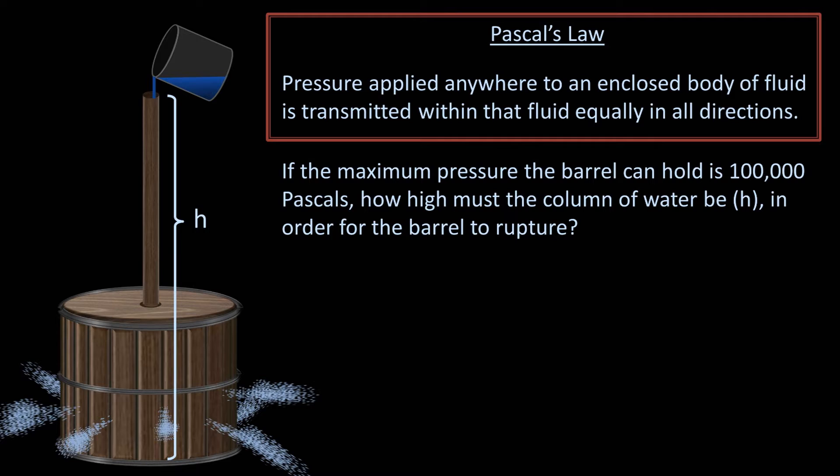We know that the primary equation of hydrostatics is the pressure gradient equals the density of the fluid times acceleration due to gravity times h. In this case, when we talk about the maximum pressure the barrel can hold, it actually refers to the maximum pressure gradient. In other words, the pressure inside can be no more than 100,000 pascals greater than that outside, which is presumably atmospheric pressure. 100,000 pascals is not an atypical value for a wooden barrel.